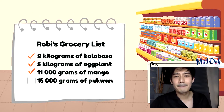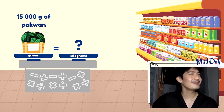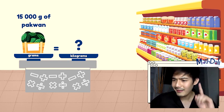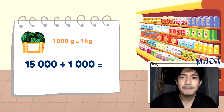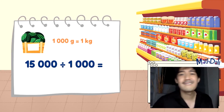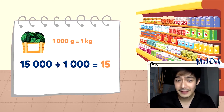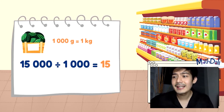Tingnan natin yung pakwan. Paano ulit mag-convert ng grams to kilograms? Divide by 1,000. 15,000 divided by 1,000 — or move three decimal places to the left — and we get 15 kilograms.